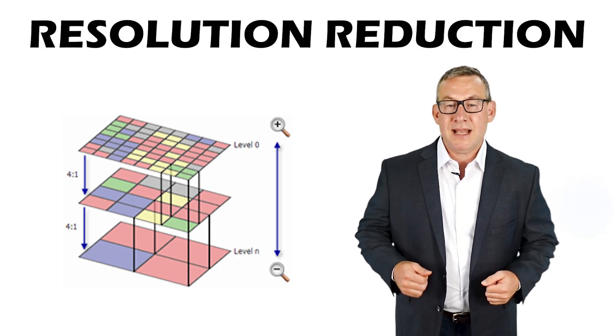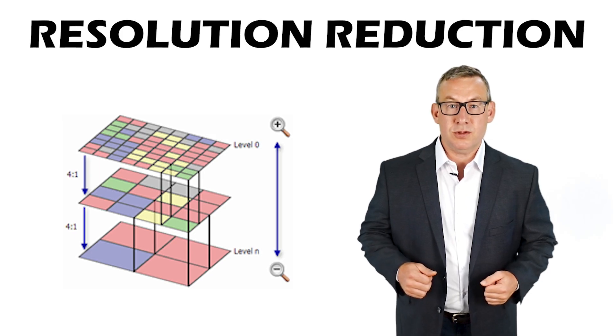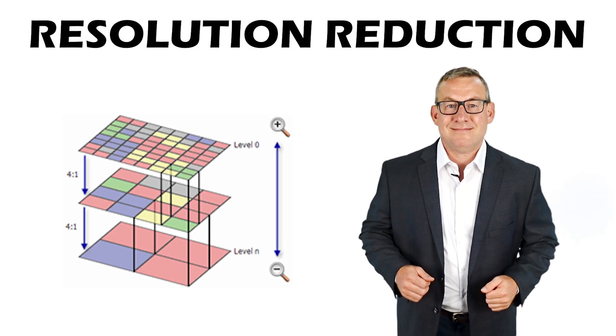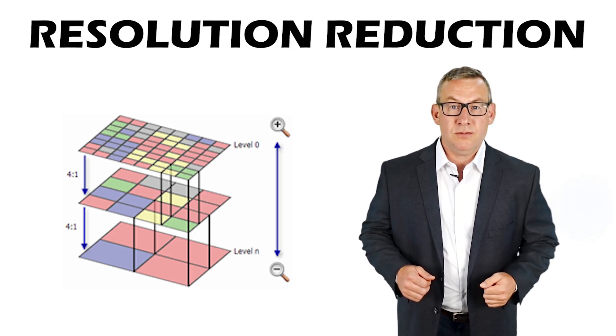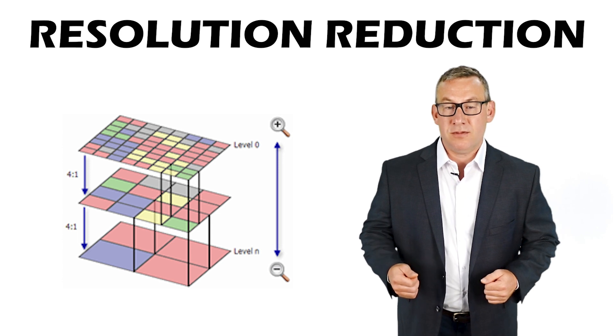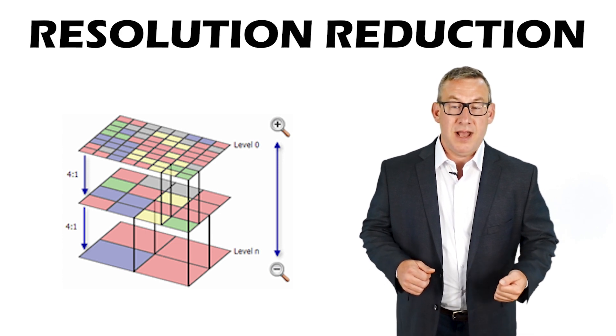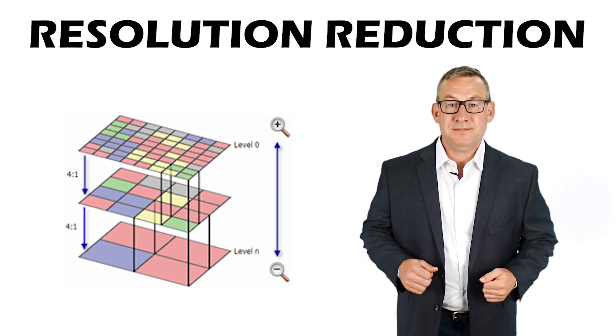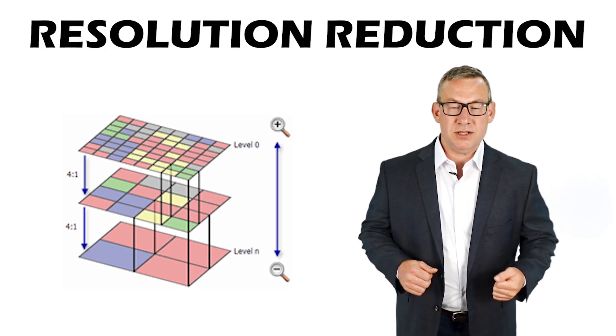Resolution reduction decreases the spatial resolution of raster data. Resolution reduction results in a larger cell size, smaller file, faster display, a loss of accuracy, and information loss.